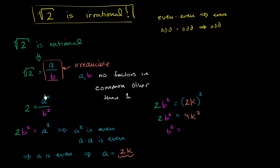Dividing both sides by 2, we get b squared is equal to 2 times k squared. This tells us that k squared is an integer, so 2 times k squared gives an even value. So b squared is even. And by the same logic we just used — since b squared is even — that tells us that b is even.